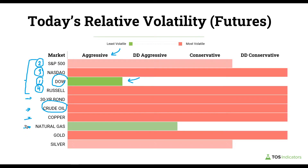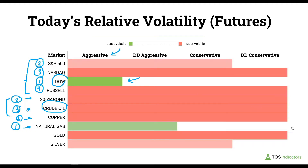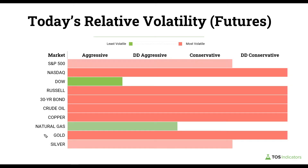If you were to rank this cluster, crude oil would be number one based on how volatile it was. Everything else I'd rank as number two, with the 30-year and copper tied. All of that said, we were on our doomsday conservative across those markets.